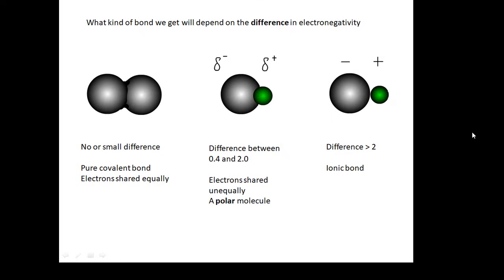And then lastly, if the difference in electronegativity is greater than 2, we get an ionic bond. And that's basically because one of the atoms gets the electrons all of the time. If the difference in electronegativity is greater than 2, you get an ionic bond. So, a pure covalent bond, a polar molecule, and then an ionic bond. Not dative, wrong word, sorry.